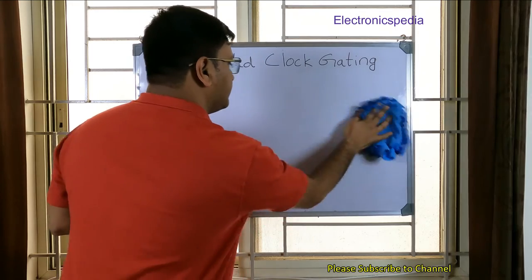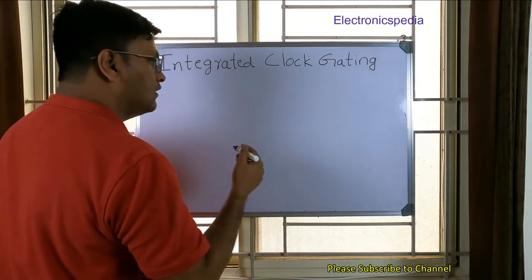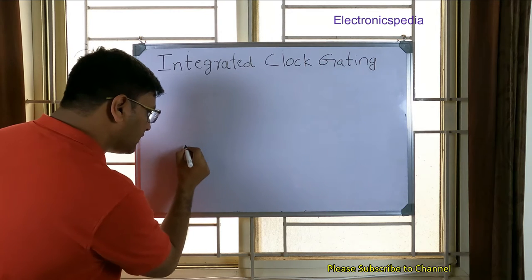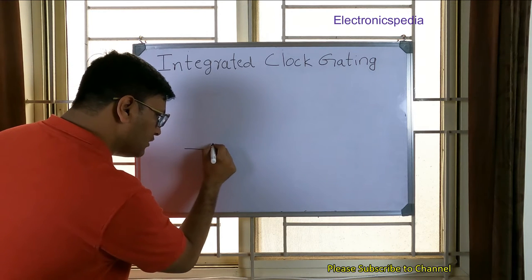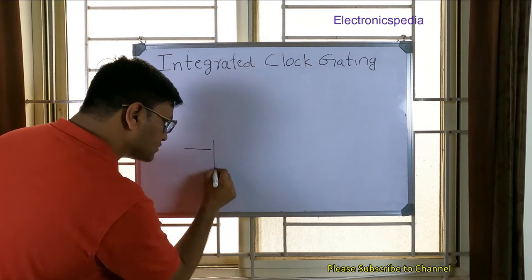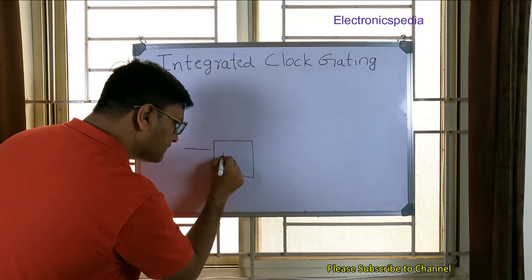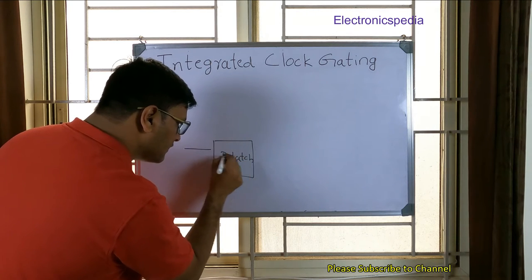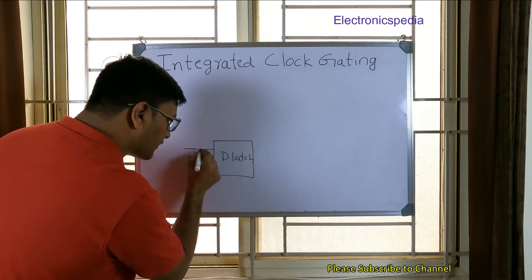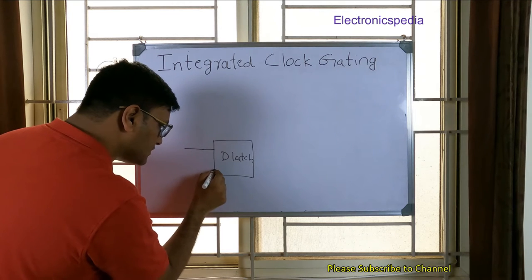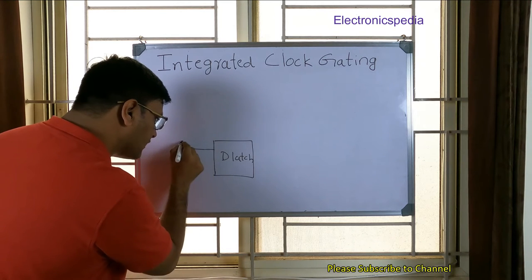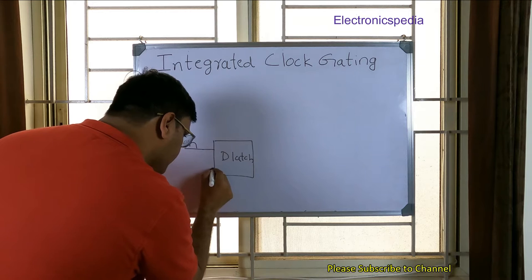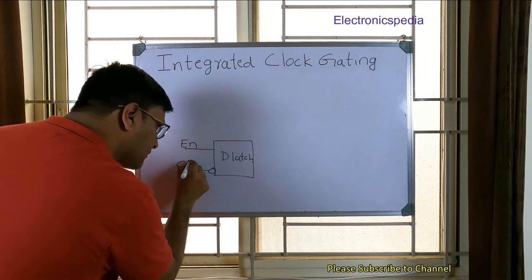Let me show how the latch-based clock gating circuit looks. The enable input goes into a D-latch, and we also have the clock input feeding into the circuit.